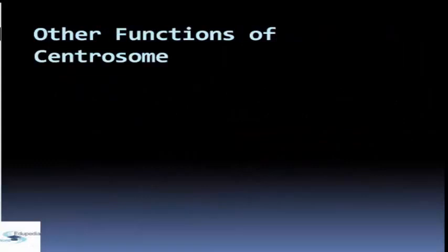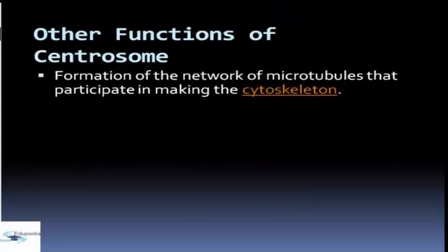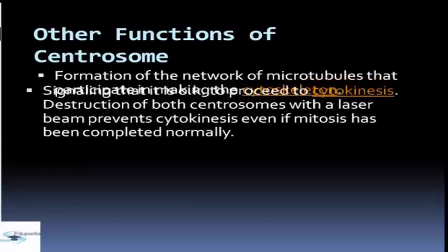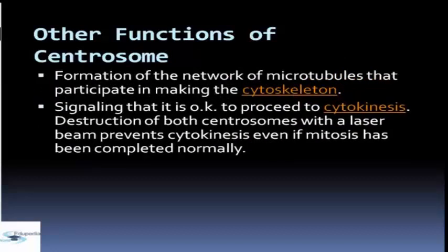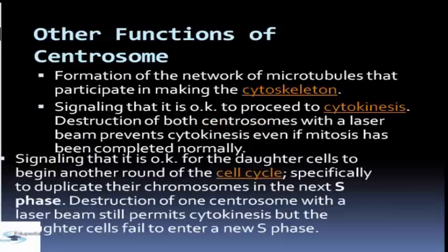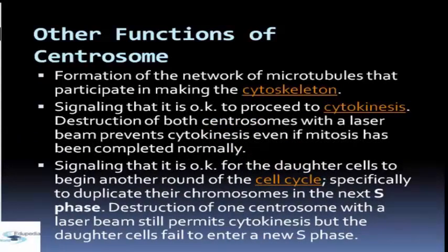Other functions of centrosomes include formation of the network of microtubules that participate in making the cytoskeleton. It also signals that it is okay to proceed to cytokinesis; destruction of both centrosomes with a laser beam prevents cytokinesis even if mitosis has been completed normally. Centrosome also signals if it is okay for the daughter cells to begin another round of the cell cycle, specifically to duplicate their chromosomes in the next S phase. Destruction of one centrosome with a laser beam still permits cytokinesis, but the daughter cells fail to enter a new S phase.